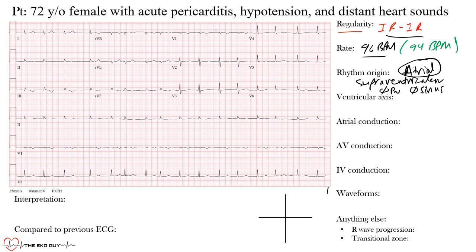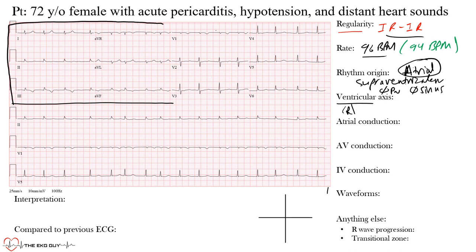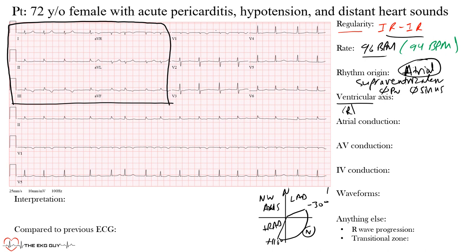Next we look at ventricular axis, which we assess using the limb leads. In our quadrant system, normal ventricular axis is from negative 30 degrees to positive 110 degrees. Beyond negative 30 degrees is left axis deviation; beyond positive 110 is right axis deviation. The northwest or 'no man's land' axis is the superior rightward region — various names for it. Normal axis lies in that standard region.